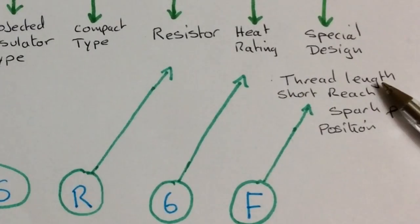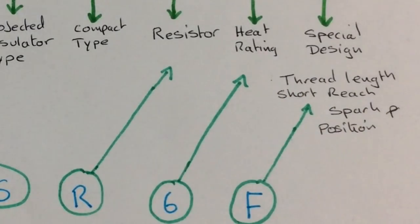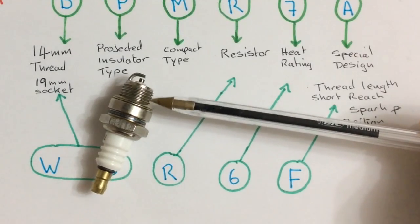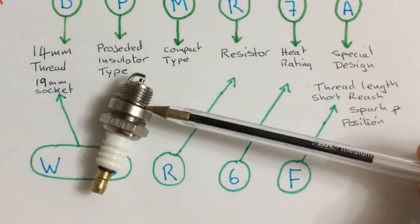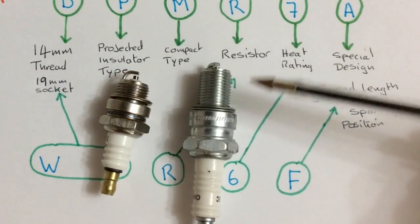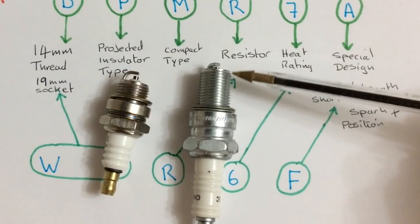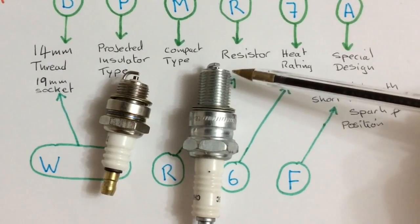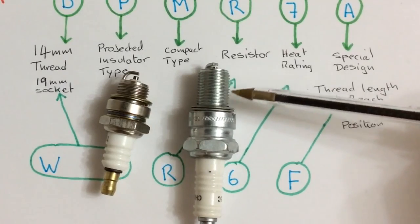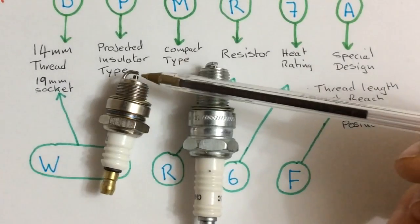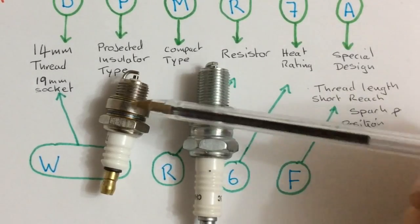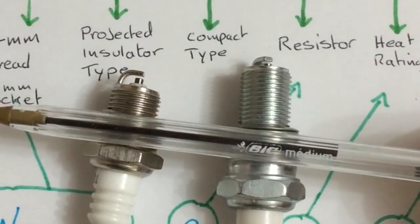F represents the thread length and the position of the spark plug. The length from there to there, and the fact that it's a short-reach plug. When we compare it to this plug, which is a longer thread length, and that's a longer-reach plug, it reaches further in, into the cylinder. So the sparking position will be in different places when these two are fixed in the cylinders.